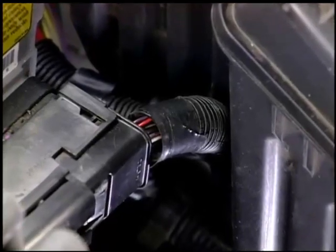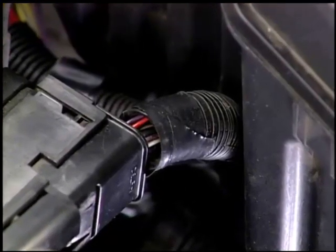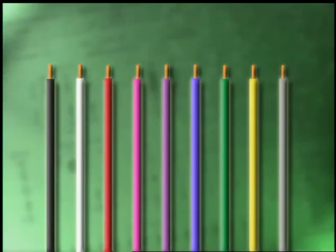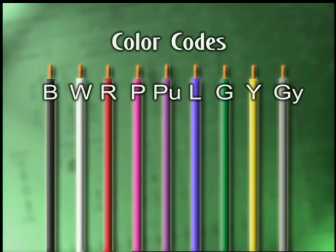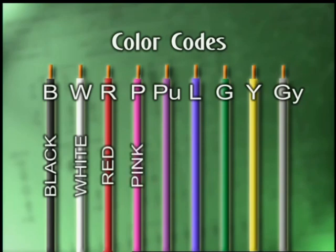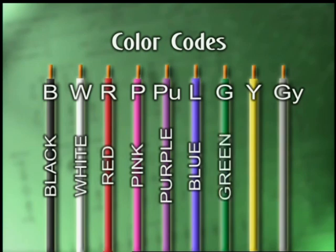Wiring diagrams and schematics typically identify the wires in a circuit by color and size. A chart in the repair manual will help you decipher the colors of the wires. A typical color chart lists the colors as B for black, W for white, R for red, P for pink, PU for purple, L for blue, G for green, Y for yellow, and GY for gray. Other colors are often used as well.